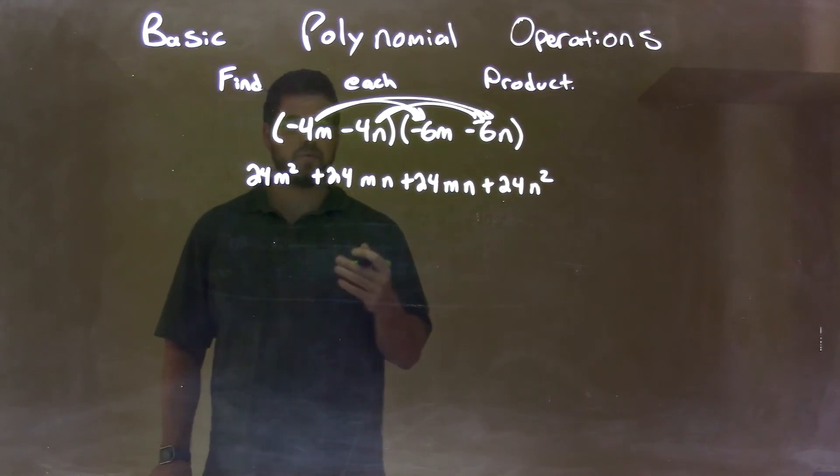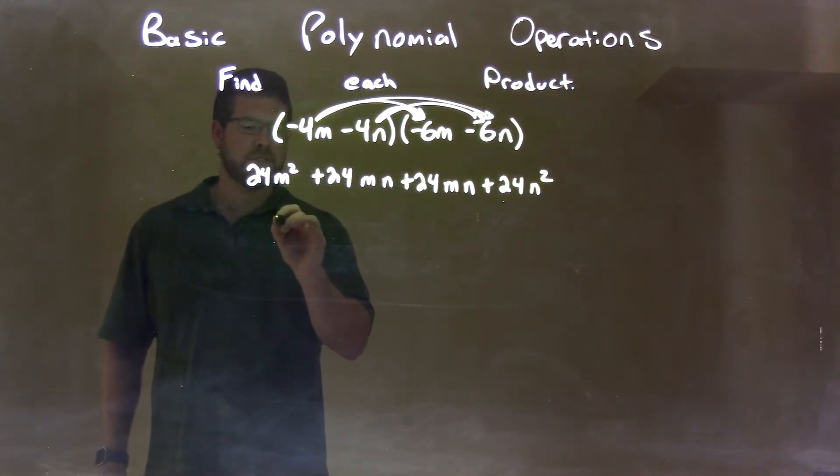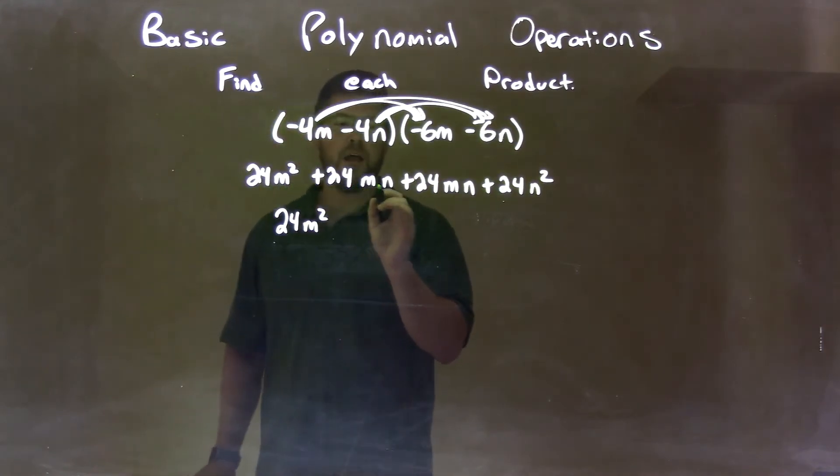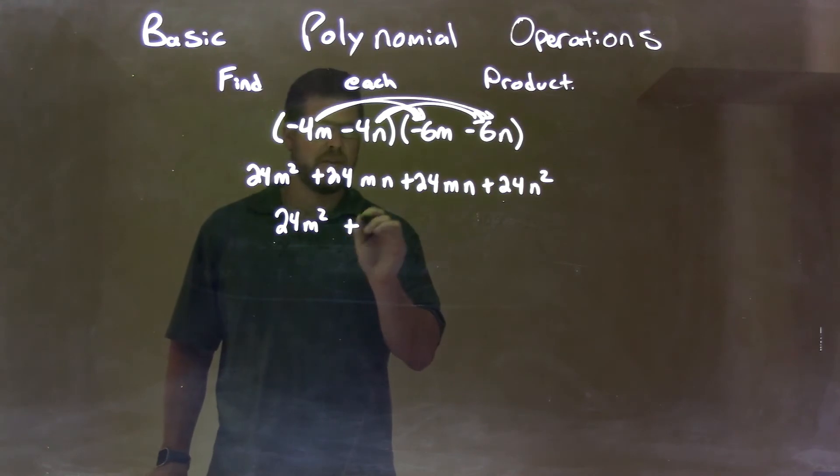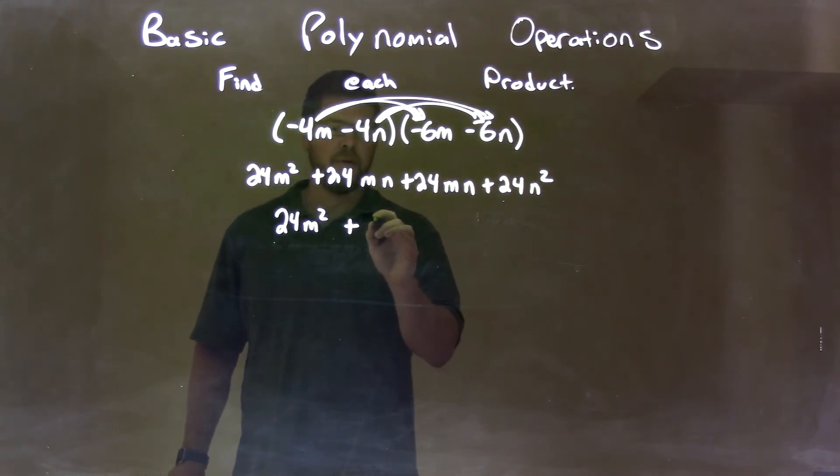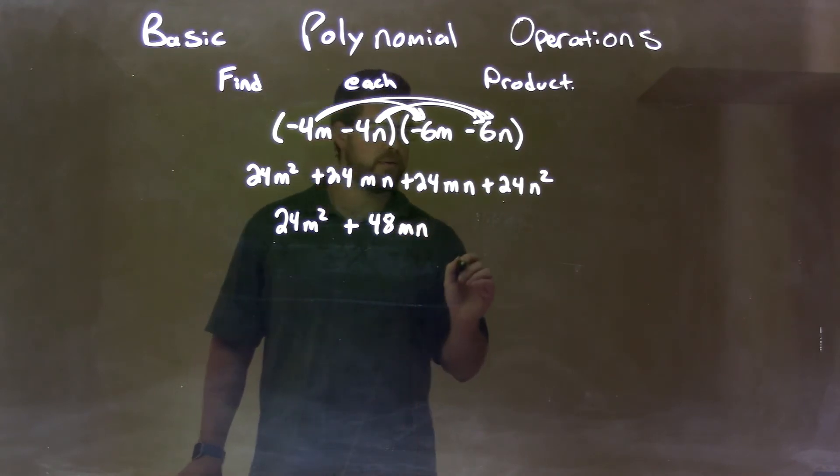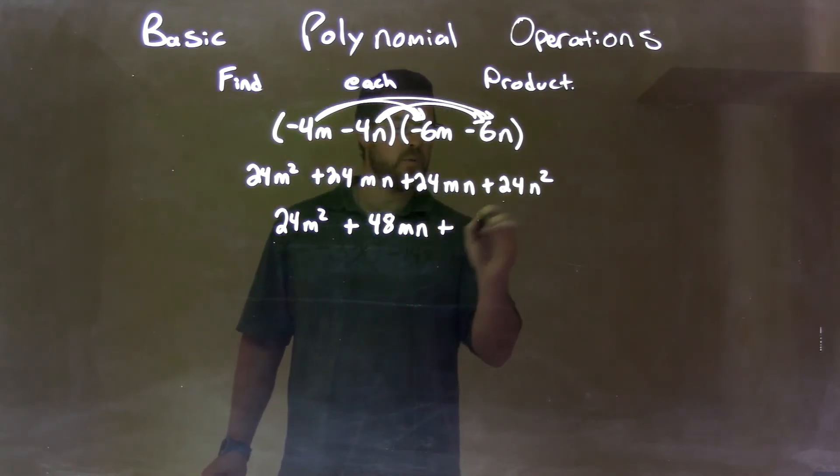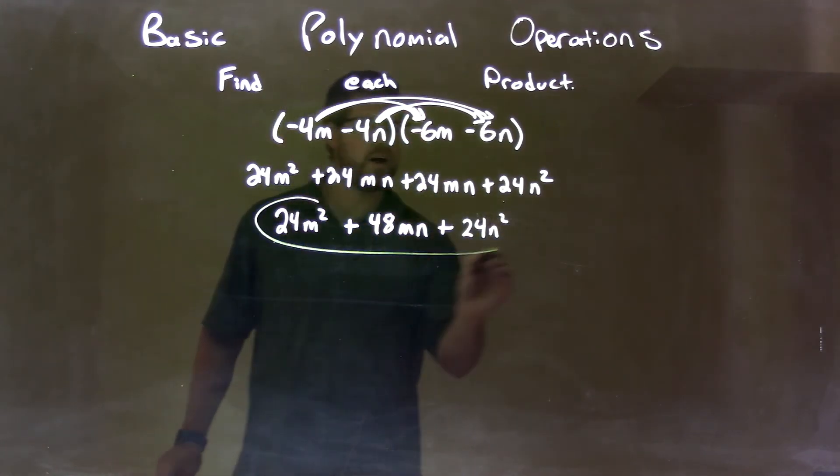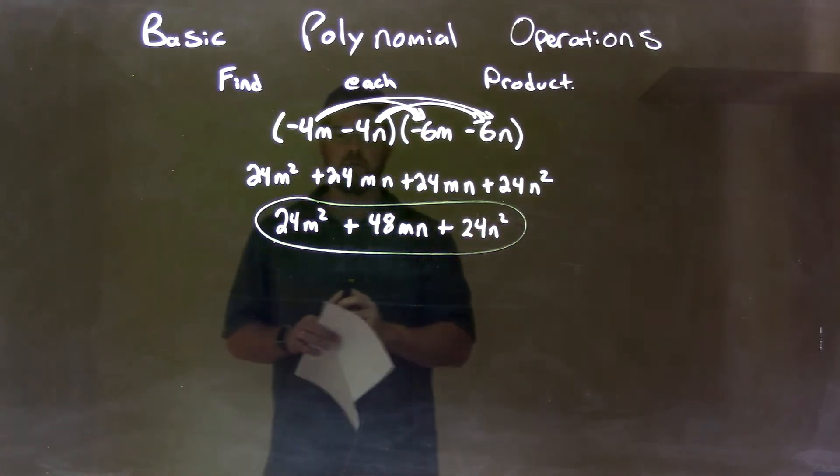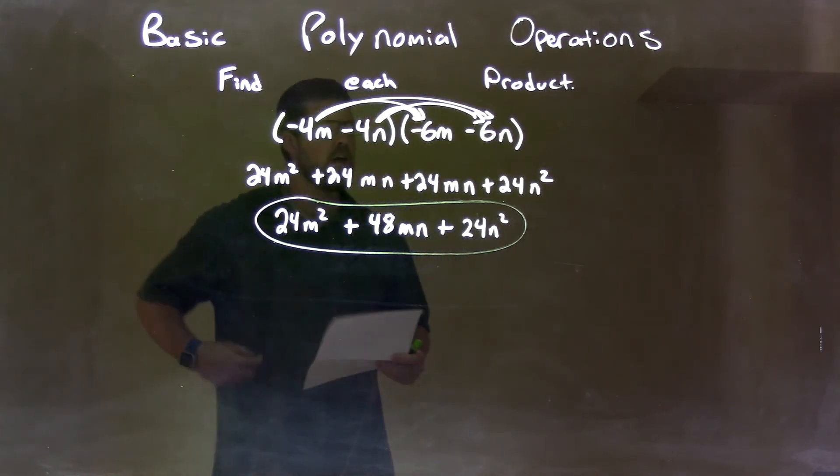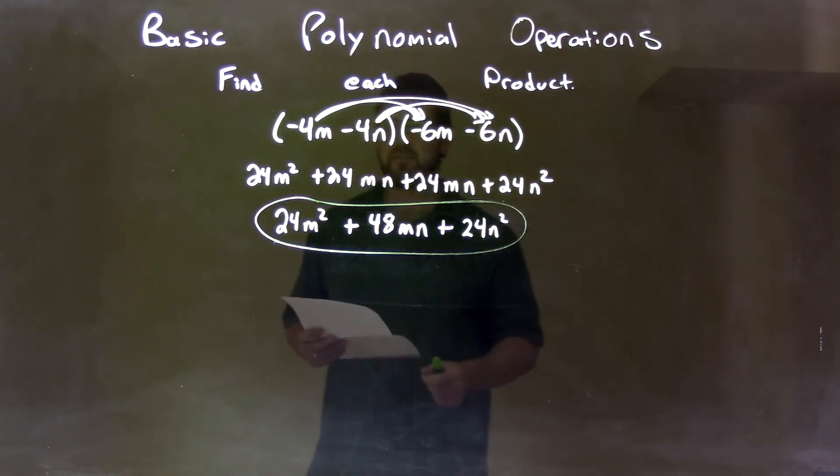Now let's simplify and combine the like terms. 24m squared comes down. I have 24mn plus 24mn, that's 48. That's a like term, same variables there being multiplied. So it's plus 48mn. Then we bring down the 24n squared and we get our final answer: 24m squared plus 48mn plus 24n squared.